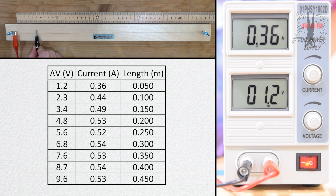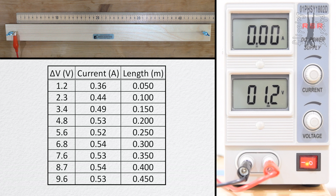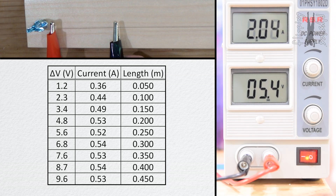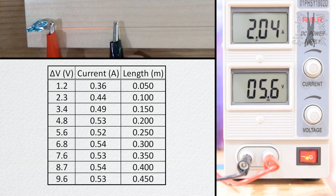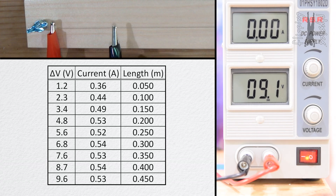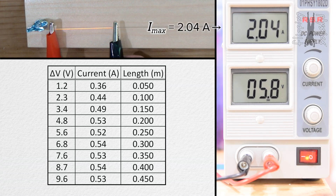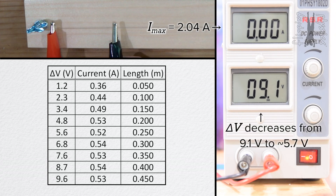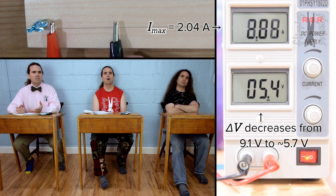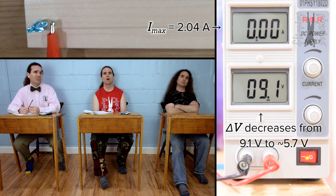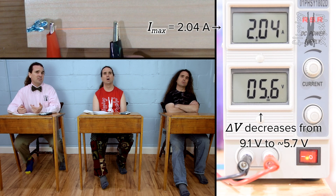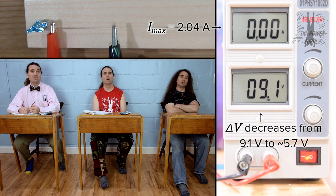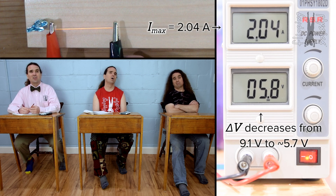Before we finish the data table and create the graph, let me show you why I decreased the electric potential difference as the length decreased. This is what happens when I try to put an electric potential difference of 9.4 volts across 5 centimeters of this nichrome wire. The variable power supply maxes out at 2.04 amps, so it reduces the electric potential difference to roughly 5.7 volts. But look at what happens to the 5 centimeter length of wire — it turns red, because the wire gets very hot. But there is also a physics reason.